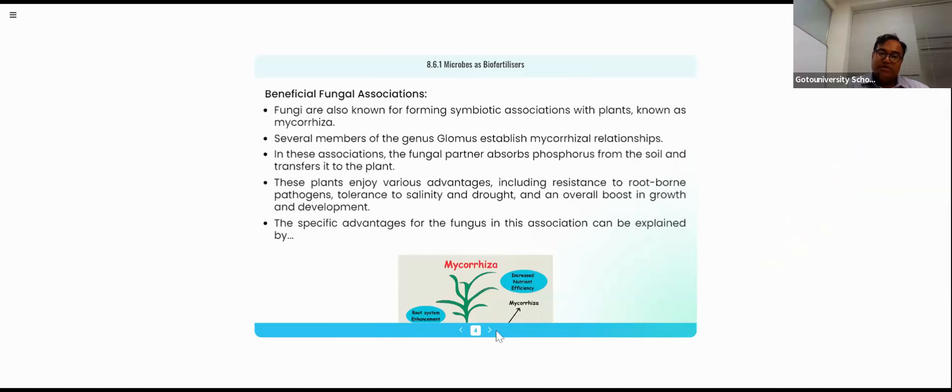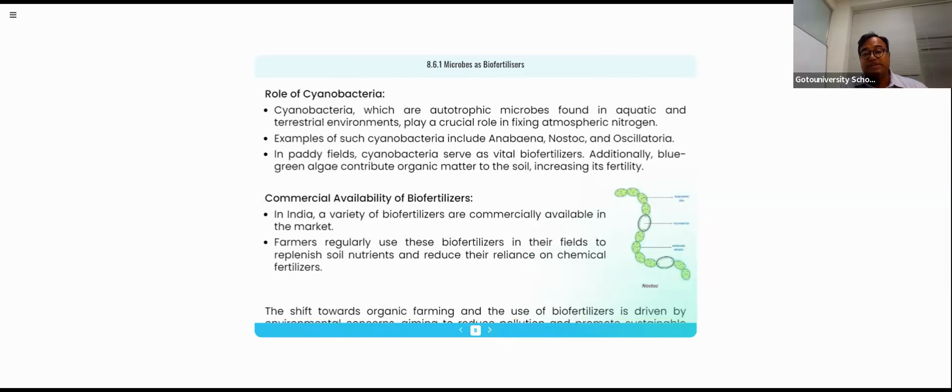Now we are entering into important concept. Not only we are using Cyanobacteria. We know very well Cyanobacteria is an oxygen fixing bacteria which is having the credential to grow very aggressively. Some of the Cyanobacteria are Nostoc, Anabaena, and Oscillatoria. This Cyanobacteria which is used as bio-fertilizers. You know very well in the paddy field we are using blue-green algae also to increase the soil fertility.